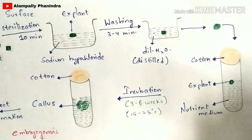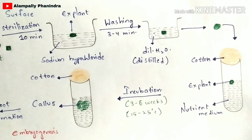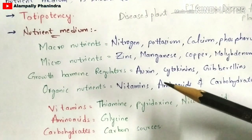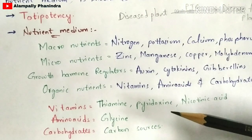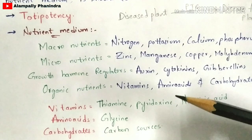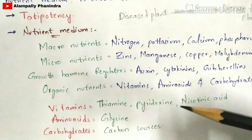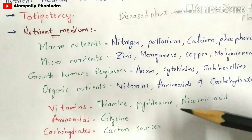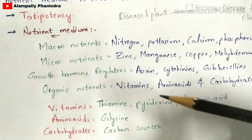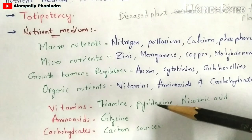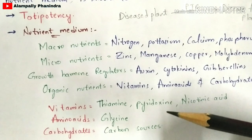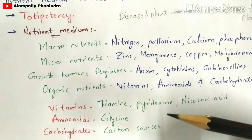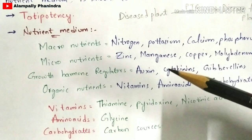Now the actual process of plant tissue culture begins. Take a test tube and add the nutrient medium. The nutrient medium contains nutrients which are necessary for the explant to develop into a complete mature plant. The best example of this nutrient medium is MS medium, which stands for Murashige and Skoog — the two scientists who discovered this medium.